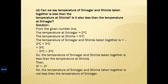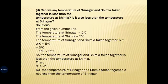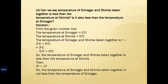Can we say the temperature of Srinagar and Shimla taken together is less than the temperature at Shimla? Is it also less than the temperature at Srinagar? From the number line, Srinagar is at minus 2 degree Celsius and Shimla is at 5 degree Celsius. Together: minus 2 plus 5 equals plus 3 degree Celsius. Since 5 is greater than 3, the combined temperature is less than Shimla's. Since 3 is greater than minus 2, it is not less than Srinagar's temperature.